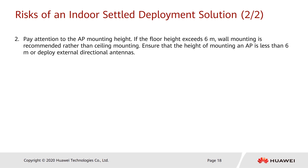The second risk lies in the AP mounting height. If the floor height exceeds 6 meters, wall mounting is recommended rather than ceiling mounting. Ensure that the mounting height of an AP is less than 6 meters, or deploy external directional antennas. This is because an AP with omnidirectional antennas may encounter coverage holes right below itself. That's all for today's introduction to the network planning solution for indoor settled scenarios.